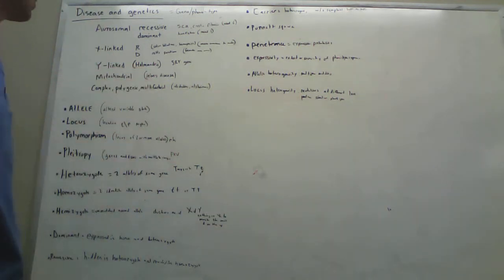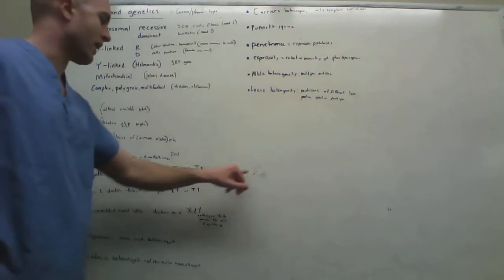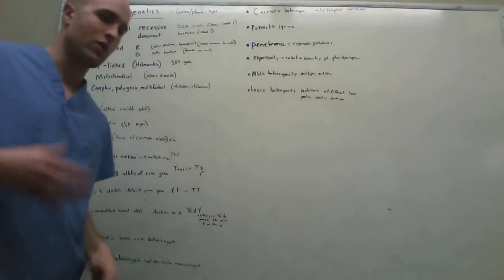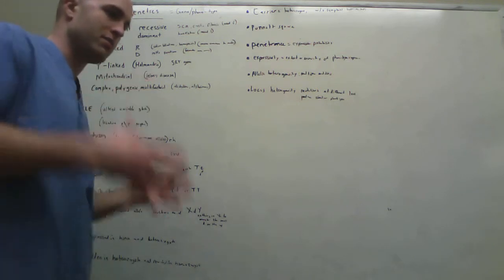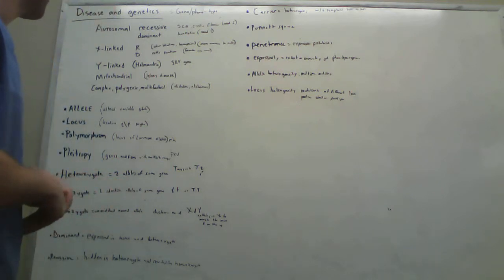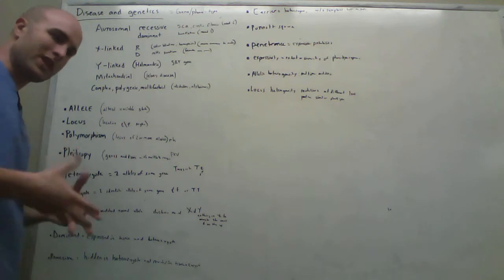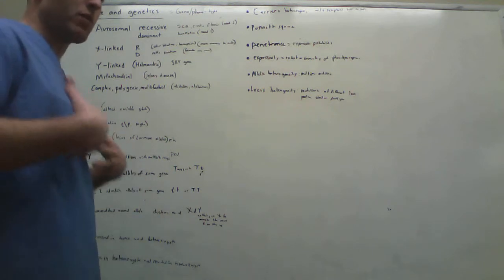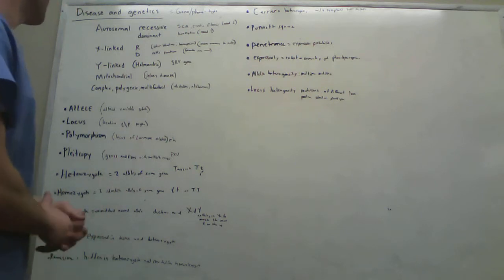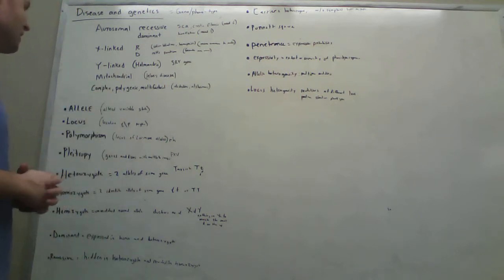So next is Y-linked, also called holandric. The SRY gene is a good example of a Y-linked disorder. The SRY gene is the gene that manifests primary male sex characteristics. Mitochondrial disease, like Leber's disease. That's where the problem is actually in the mitochondria. So it's always passed from the woman down because the baby gets the woman's mitochondria, not the man's. And then there's also complex polygenic multifactorial disease, which I'll call Alzheimer's disease.